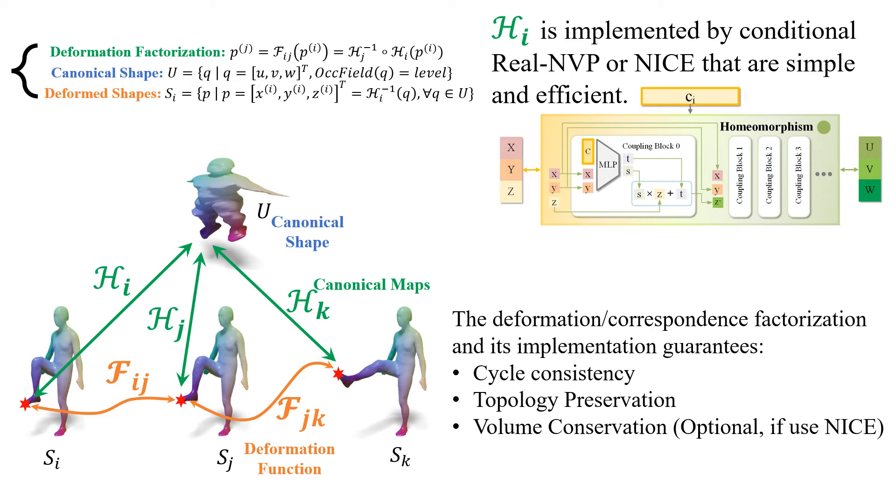Until now, the definitions above would lead to infinitely many valid canonical shapes and maps, since any surface that is topologically isomorphic to the deformable instance satisfies the definition. Our representation is fully differentiable,